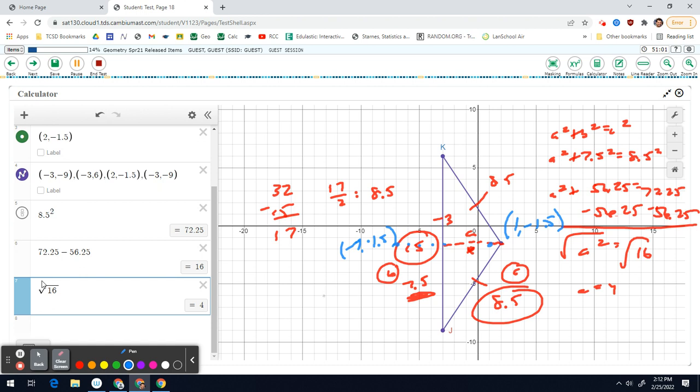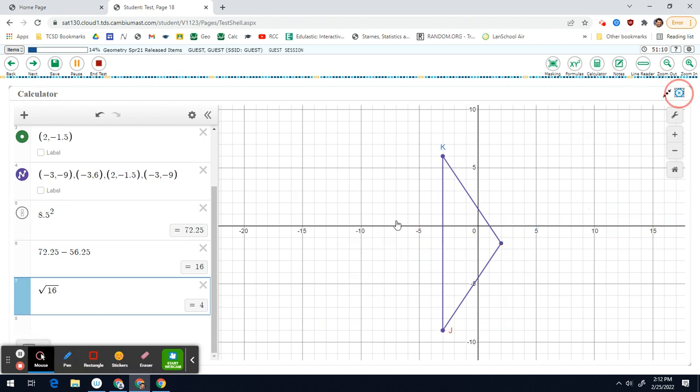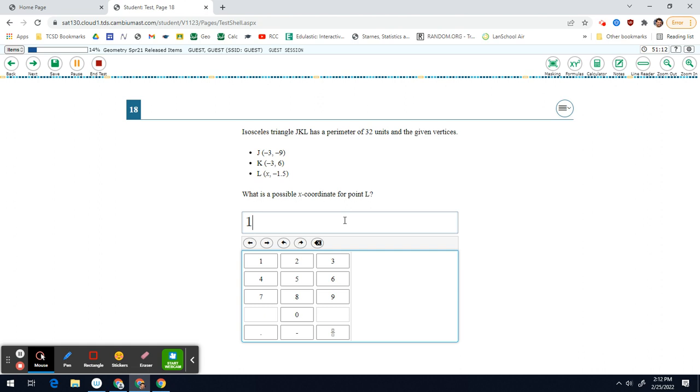But either X value would be good. So your choices are 1 or negative 7. So in my answer box there, I'll just type in 1. And there we go.